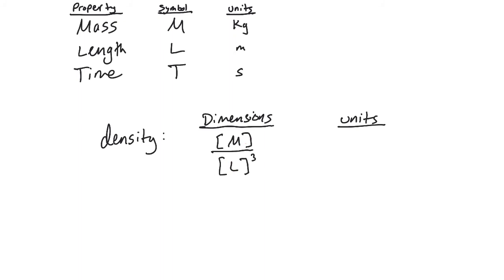Instead, what would the units of density be? Well, mass has units of kilograms. And then length cubed, well, length has units of meters. And so we would have to cube meters. So we would get kilograms divided by meters cubed.